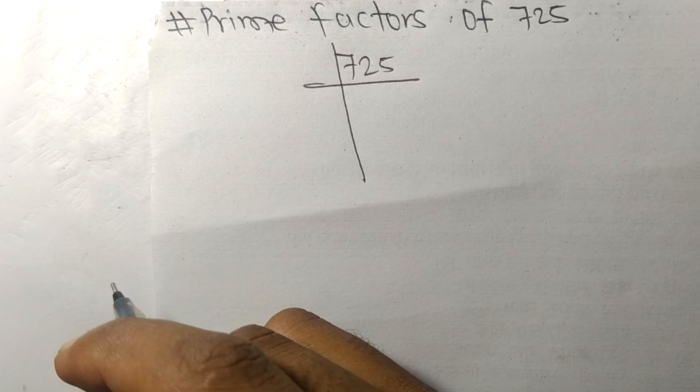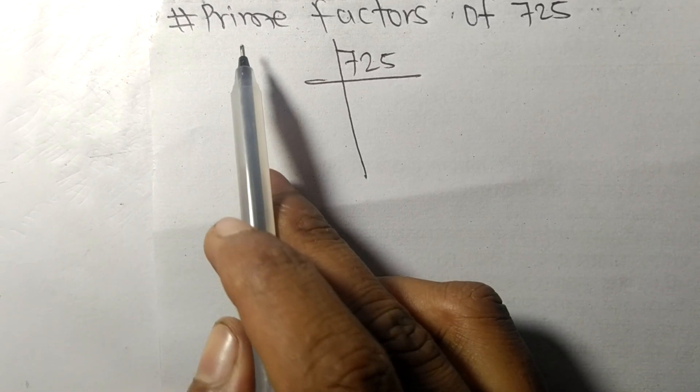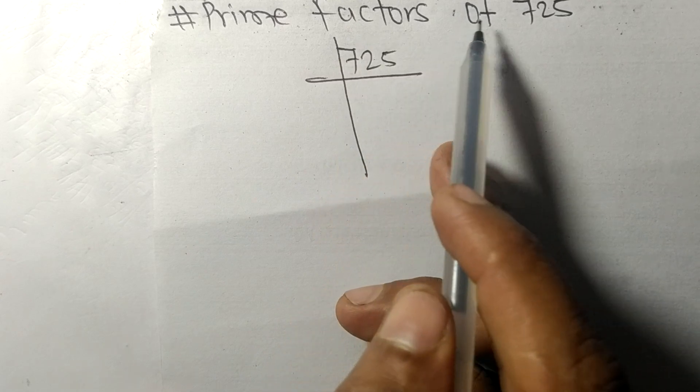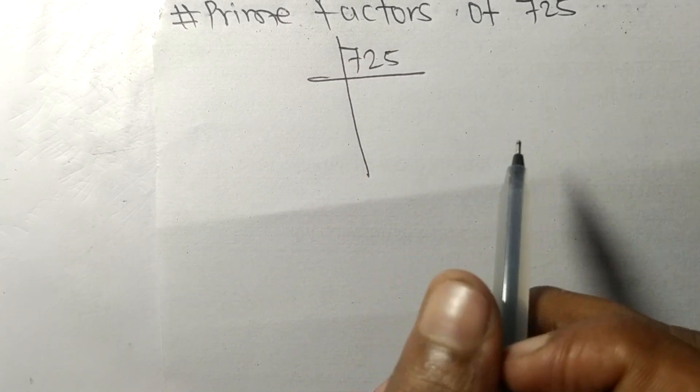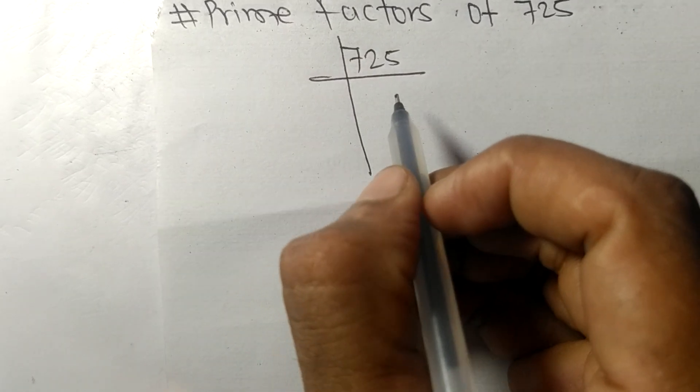Today in this video we shall learn to find the prime factors of 725. It contains 5 at last, so these whole numbers are also divisible by 5.